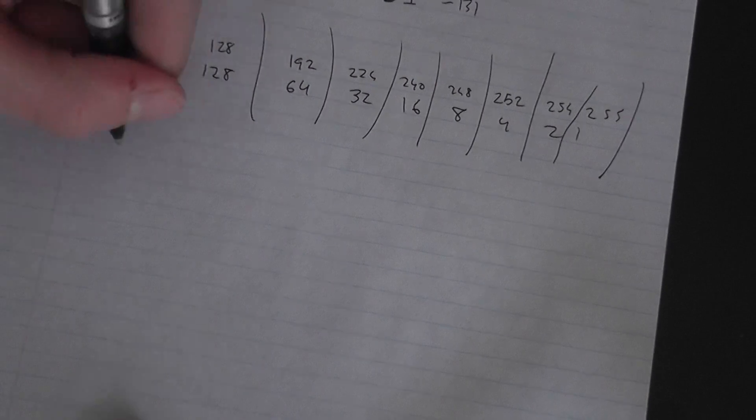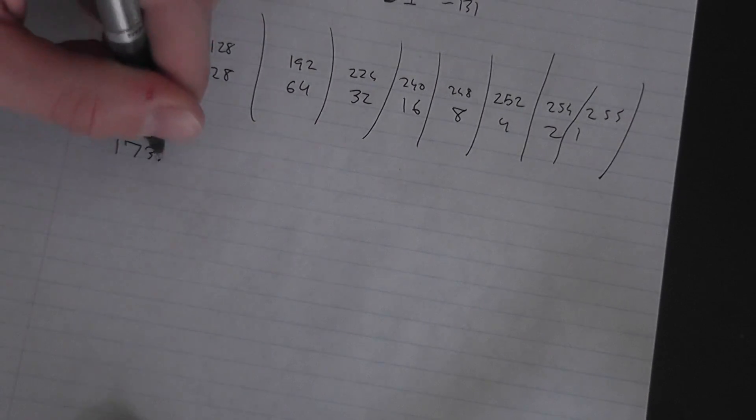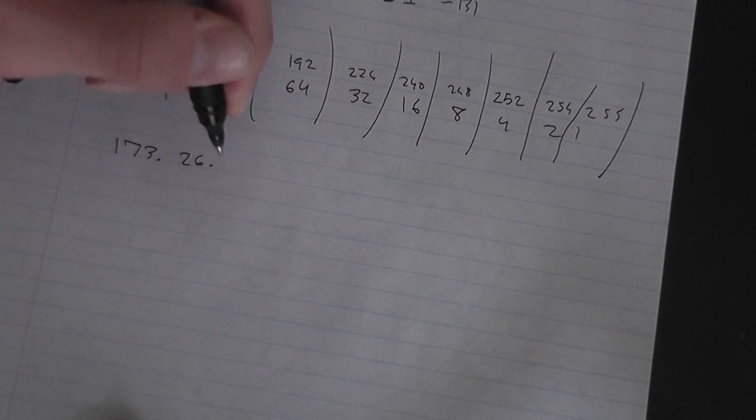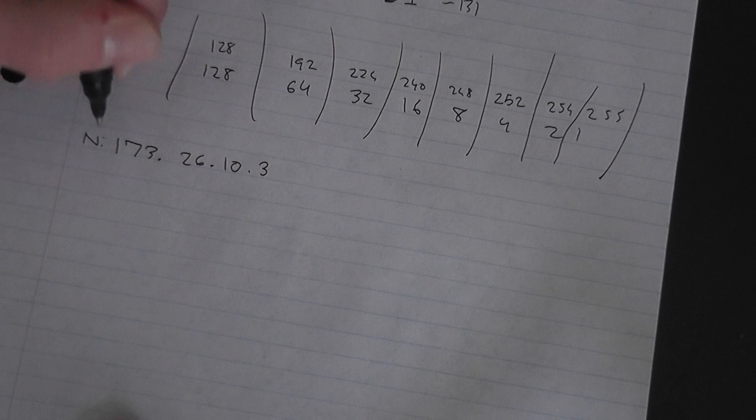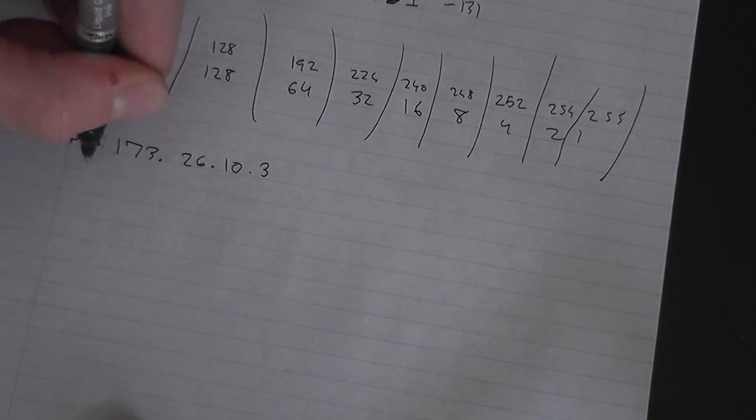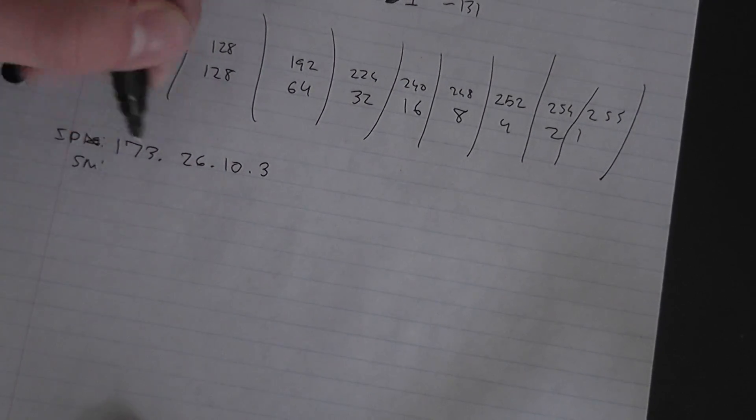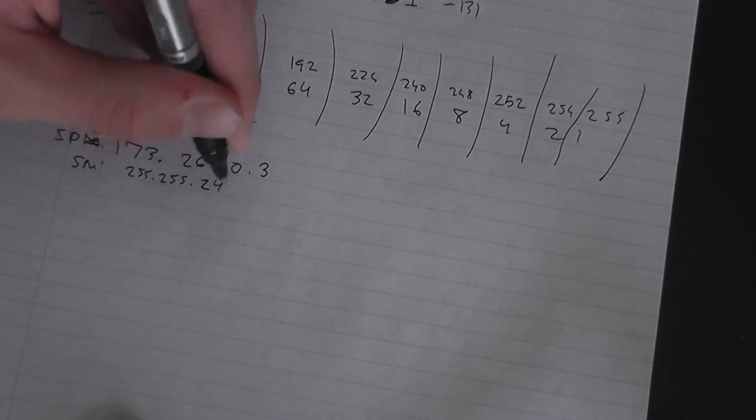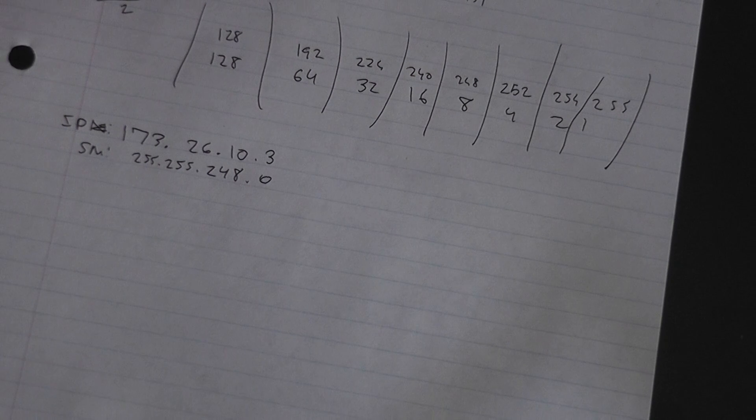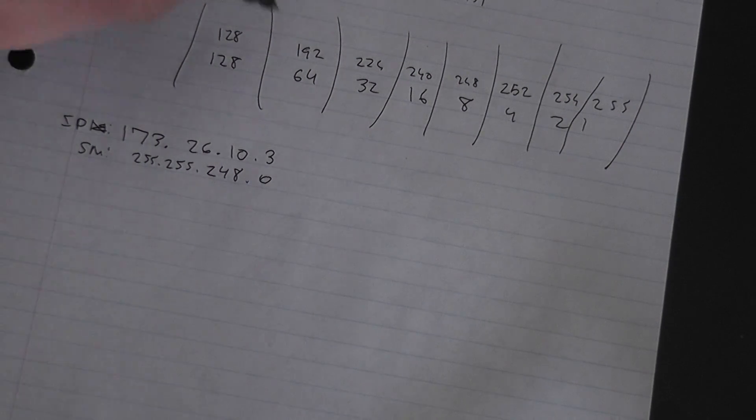Now what you want to do is take an IP address like 173.26.10.3 - this is your network or IP address. Your subnet mask is 255.255.248.0. Now you're like, how do I solve that?